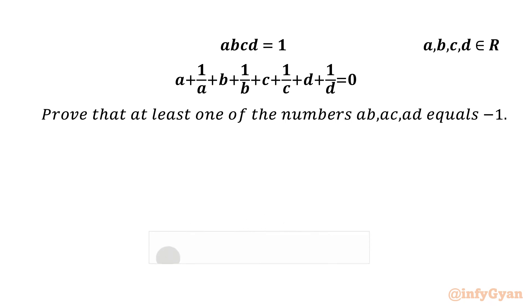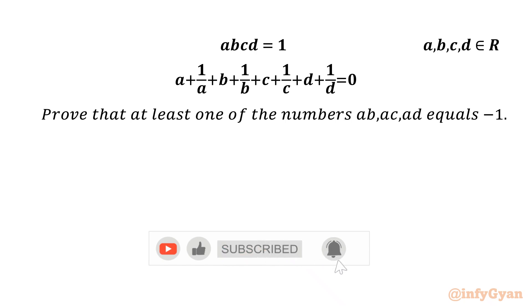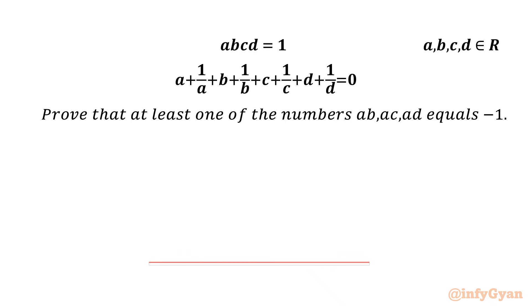Welcome to Infigyan, my dear friends. Today in this video we have one very interesting and challenging question from algebra. We have two known equations: ABCD = 1, and A + 1/A + B + 1/B + C + 1/C + D + 1/D = 0. Given that A, B, C, D are real numbers, we have to prove that at least one of the numbers among AB, AC, AD equals negative 1.